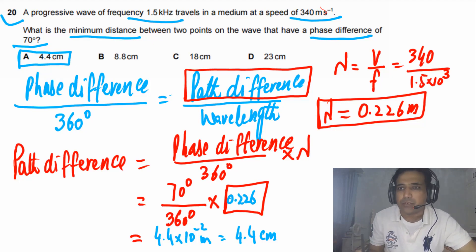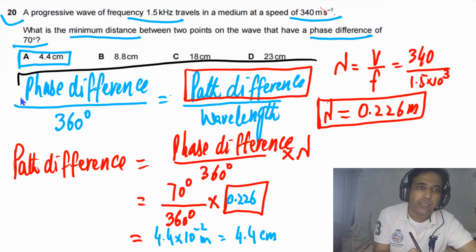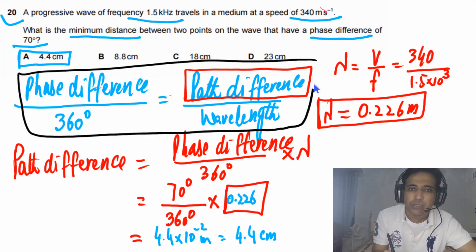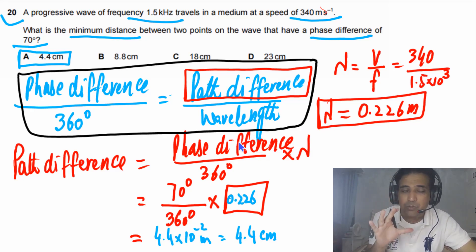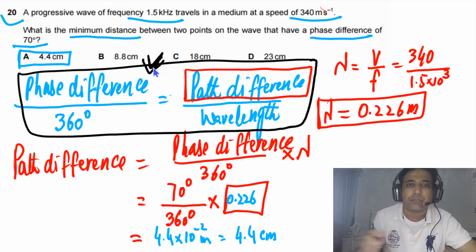The main concept to remember: the ratio of phase difference to 360 degrees equals path difference divided by wavelength. This is a very important concept — try to understand and remember it.